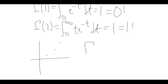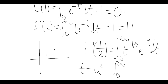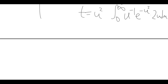What does this have to do with pi? Well, for example, if we try to compute gamma of 1/2, that's the integral of t to the minus 1/2 times e to the minus t from 0 to infinity. If we make a substitution t equals u squared, then t to the minus 1/2 is just 1 over u, e to the minus t is e to the minus u squared, and the differential becomes 2u du. So what we end up with is twice the integral of e to the minus u squared.